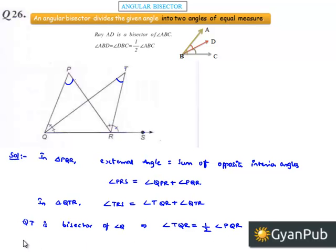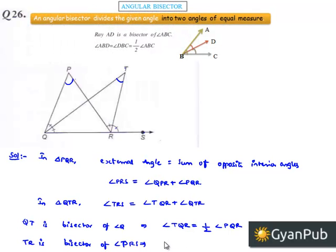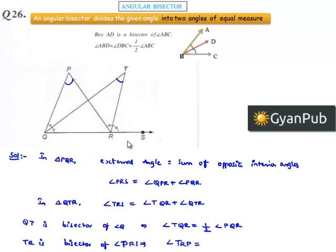And also, TR is the bisector of angle PRS. Therefore, we can say that angle TRS is equal to half times angle PRS.